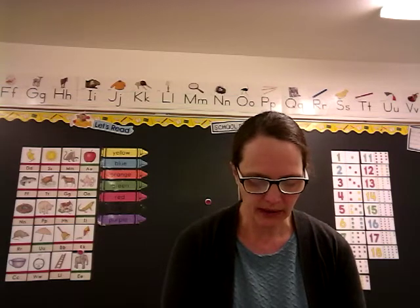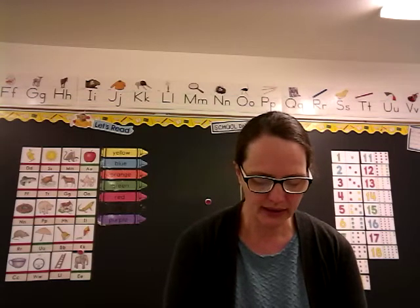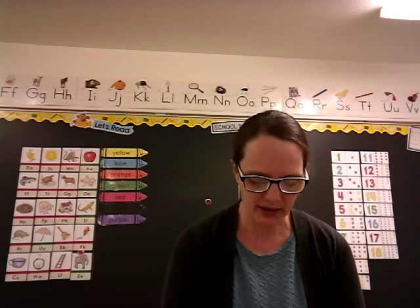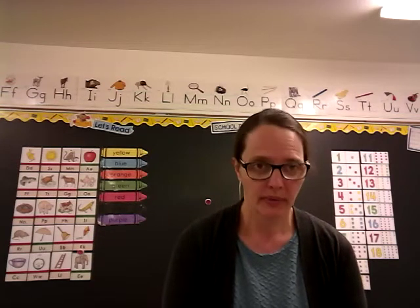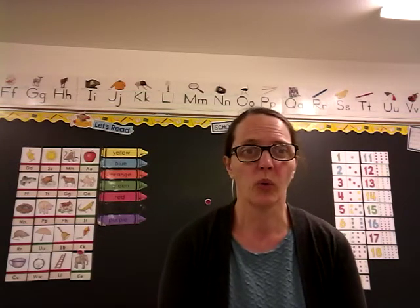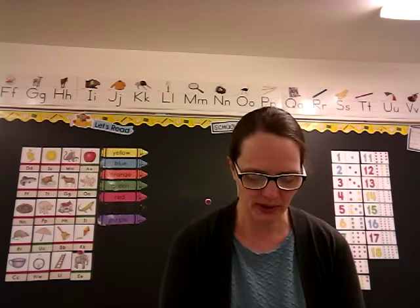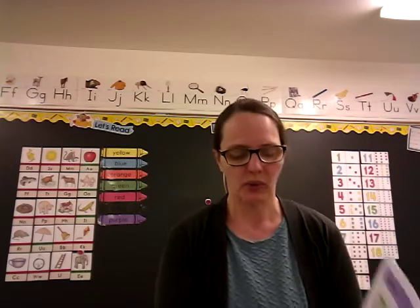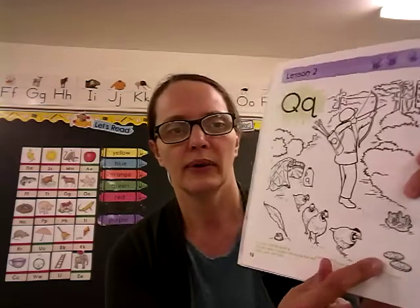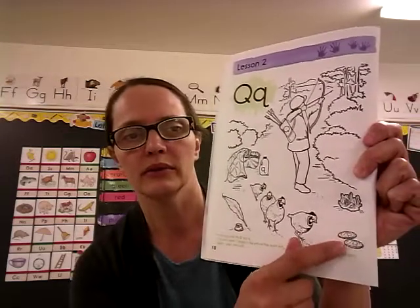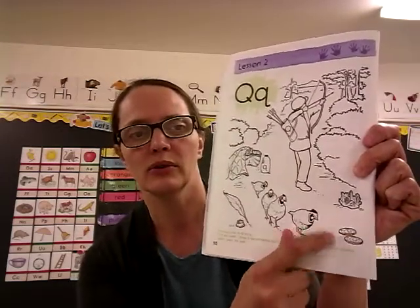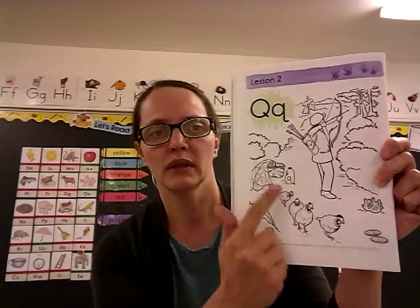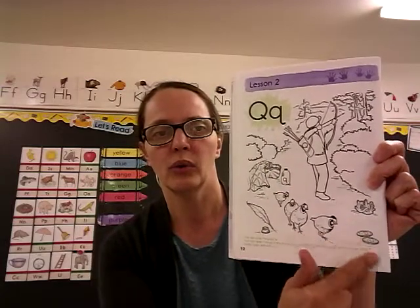Anybody see anything else in that picture? There's some money there — see those two coins laying on the trail. What are those coins called? Quarter. Quarter starts with the Q. See the quarters here? Right here are two quarters. You can circle the quarters. Now we have quilt, quail, and quarters.